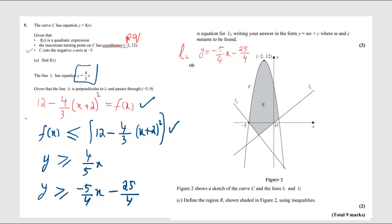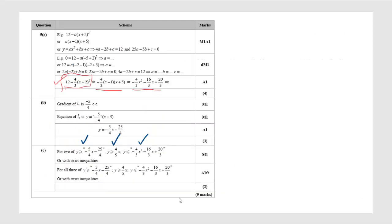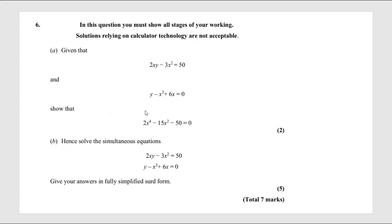For the next question, you have to find the value of y from one equation and substitute into the other. It becomes a disguised quadratic (coded quadratic). Solve for x, then substitute back to find y. Please do this question at home and give your answer in fully simplified surd form.